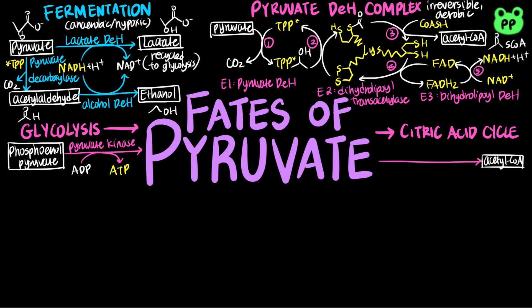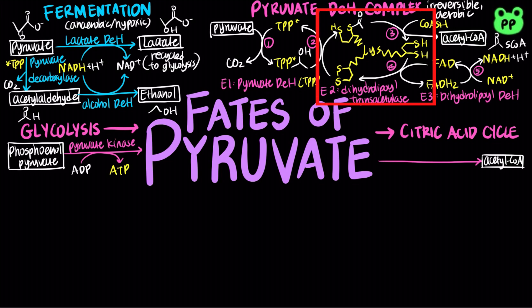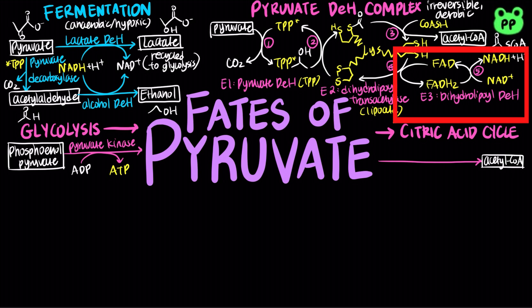In summary, the pyruvate dehydrogenase complex catalyzes the oxidative decarboxylation of pyruvate to acetyl-CoA with three distinct enzymes. Enzyme 1, pyruvate dehydrogenase, has prosthetic coenzyme TPP, which decarboxylates pyruvate. Enzyme 2, dihydrolipoyl transacetylase, contains the prosthetic coenzyme lipoic acid, which has a long lipoamide arm that swings between the active sites of the three enzymes and catalyzes the transfer of the acetyl group to coenzyme A, a cosubstrate rather than a prosthetic coenzyme. The third enzyme, dihydrolipoyl dehydrogenase, contains the prosthetic coenzyme FAD, which functions in regeneration of the oxidized form of lipoamide coupled to the reduction of the cosubstrate NAD+ to NADH.